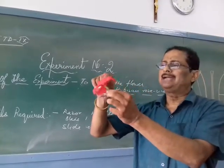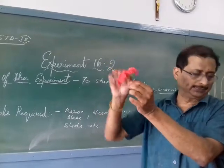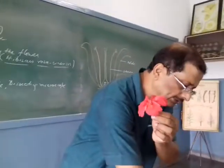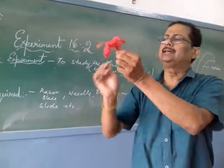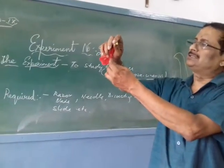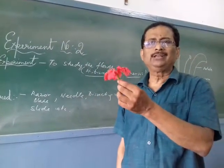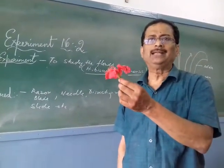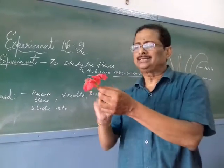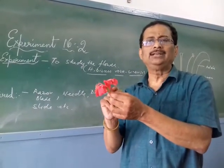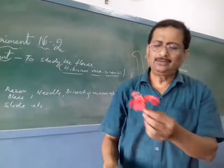Just above the bracts we have the green color sepals. The sepals are fused together — if the sepals are fused we call it gamosepalous, and if they are free we call it polysepalous. Here, since the sepals are fused, we call it gamosepalous.